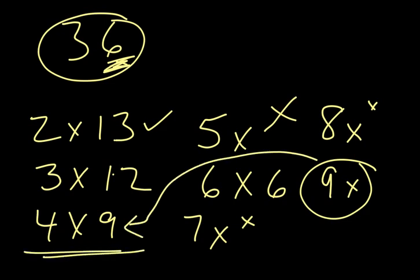We already know it's in the nine times table because we had it here. So that means it's in the four times table and the nine times table. The factors of 36 are 2 and 18, 3 and 12, 4 and 9, 6 and 6.